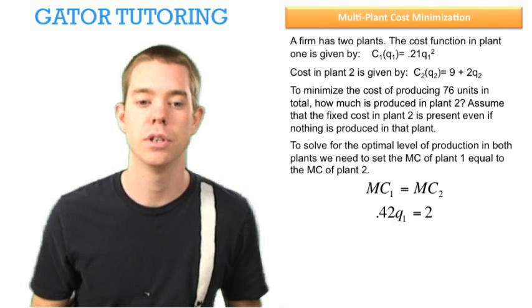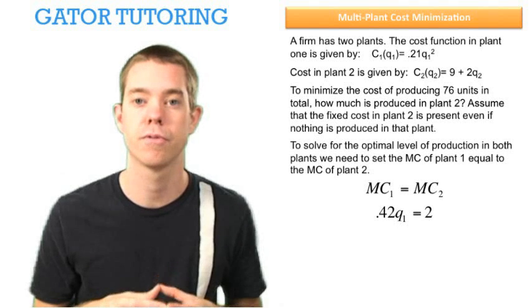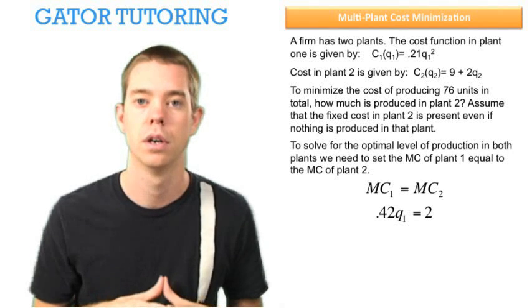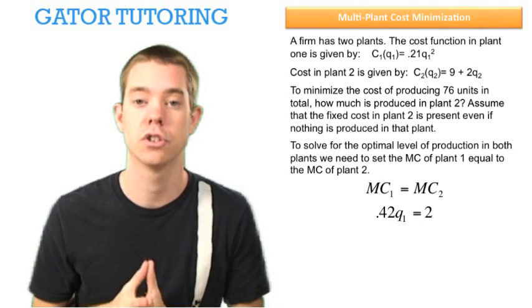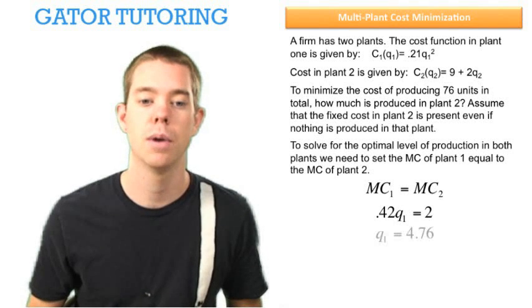When we do this, we see that plant 1's marginal cost is .42q1, plant 2's marginal cost is just 2, so we set those two equal and solve for q1 equals 4.76.